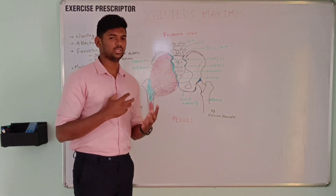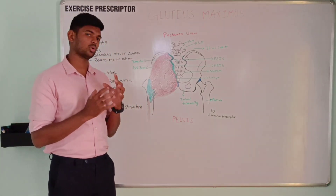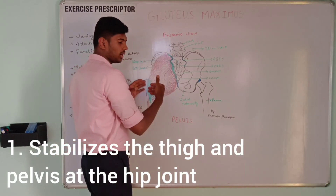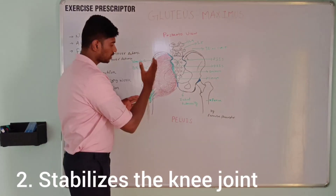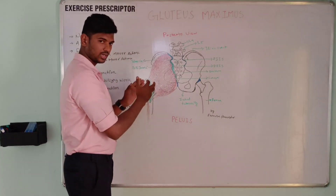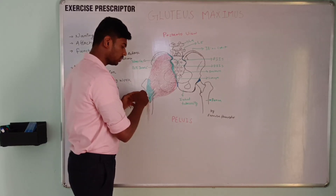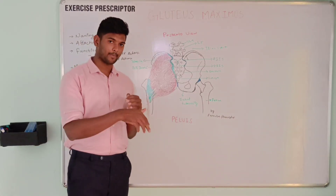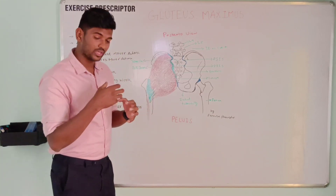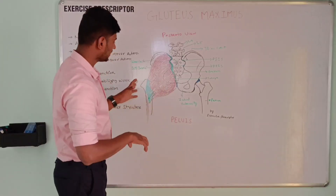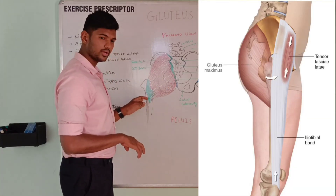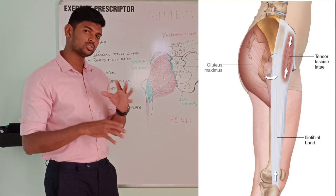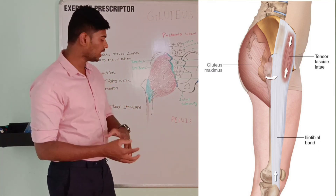Next, we will look at the isometric stabilization work of gluteus maximus. The gluteus maximus and tensor fasciae latae are both muscles attaching over the iliotibial band. The iliotibial band crosses the knee anteriorly, so theoretically it has to extend the knee. The tensor fasciae latae and gluteus maximus attached over the IT band, and the IT band crossing the knee anteriorly helps to stabilize the knee joint anteriorly with the help of these two muscles.